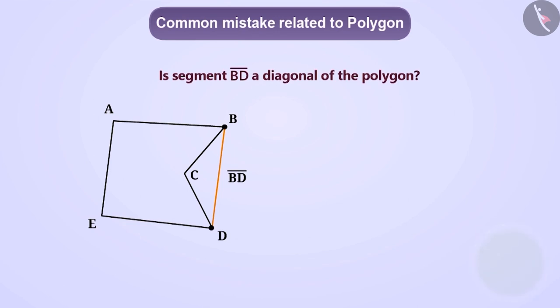Let me tell you. Some students think that line segment BD is outside of polygon. Therefore, it cannot be a diagonal. But this is a wrong understanding. The correct understanding is that if we connect two such vertices of a polygon which are not adjacent, then we get a diagonal. It is not necessary that diagonal should be present inside the figure only. It can be outside also.